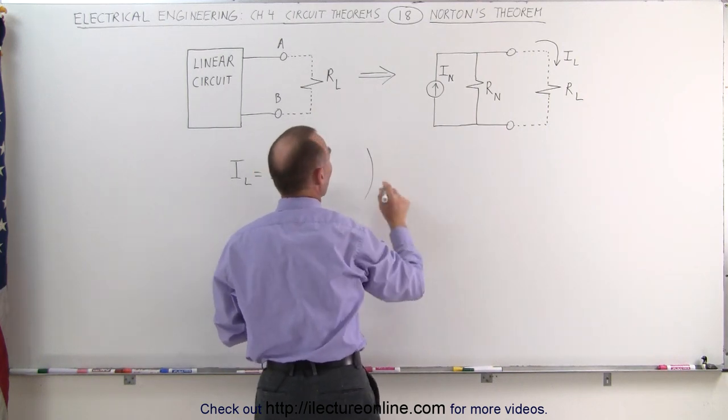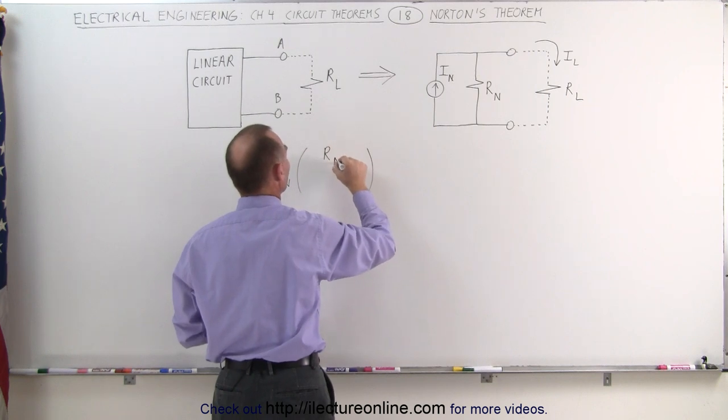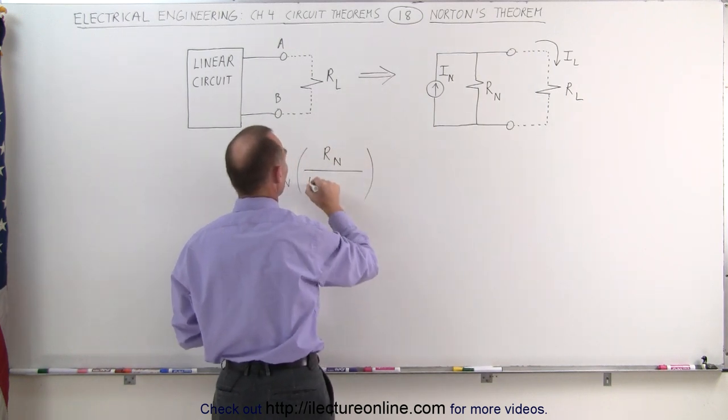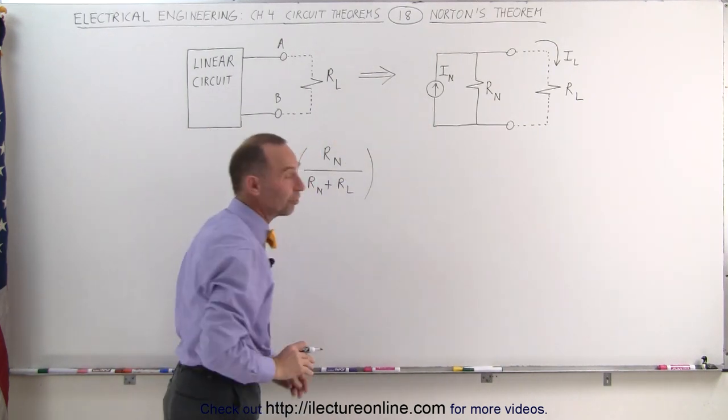Times the ratio of the resistance of the other branch, which would be the Norton's resistance, divided by Norton's resistance plus the load resistor. So that would be the current going to the load resistor.